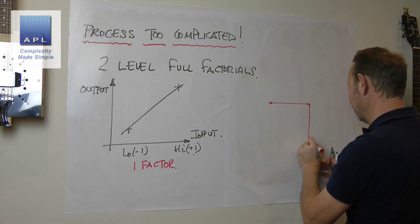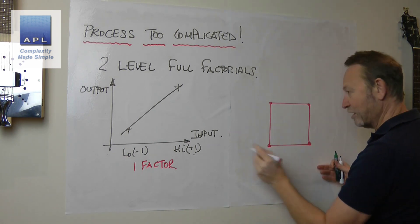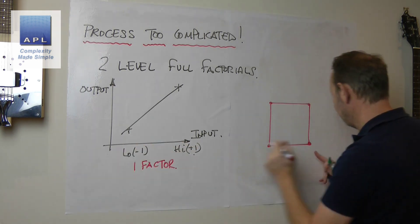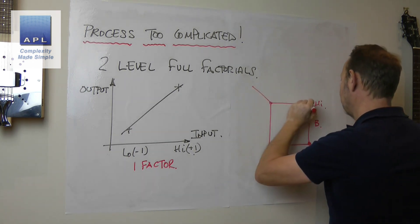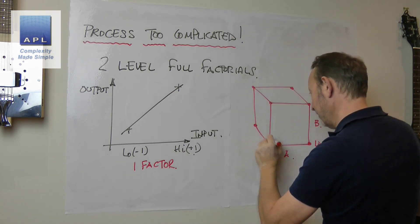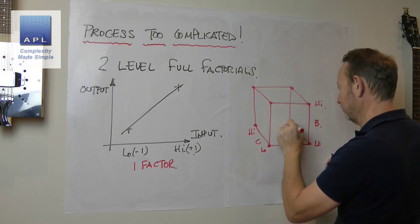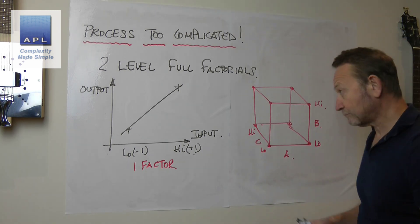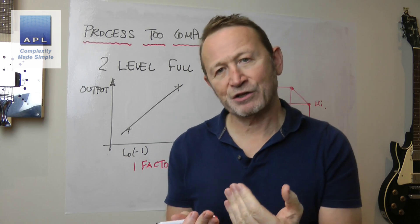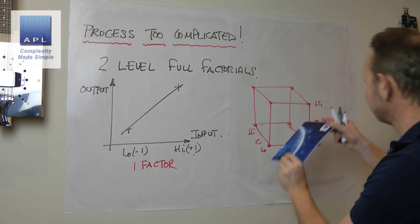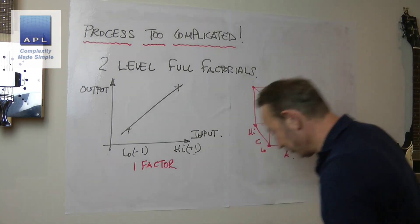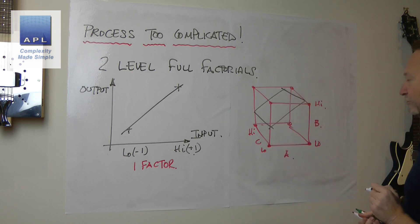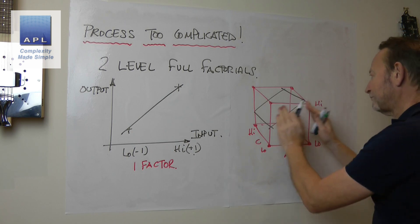Let me try and draw it as a three-dimensional problem for you. So this is factor A, tested low and high. This is factor B, tested low and high. This is factor C, tested low and high. Let's finish the box off. Now we still have a linear relationship. So the way to think about the linear relationship is think of it like a plane now, going through the center of that box. So you can still think of this like this. And you start to go, okay, well, that's still relatively simple. So that's three dimensions.